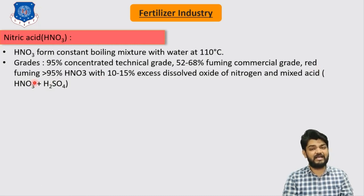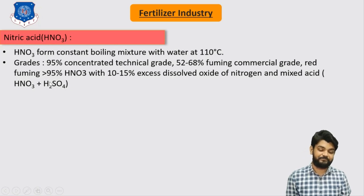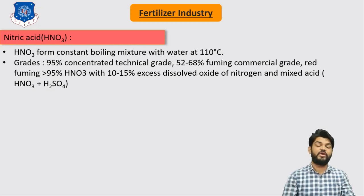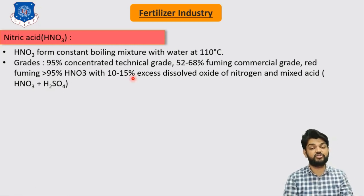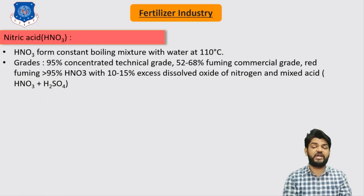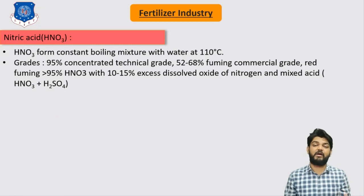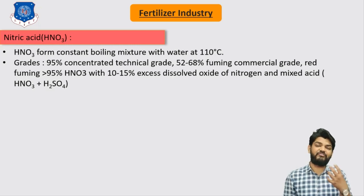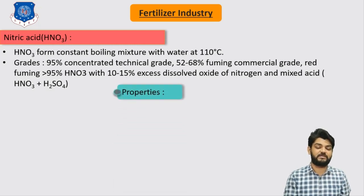Red fuming nitric acid has a concentration greater than 90% and contains around 10 to 15% excess dissolved nitrogen oxides. It is also mixed with sulfuric acid to form what is called mixed acid — a combination of nitric acid and sulfuric acid.